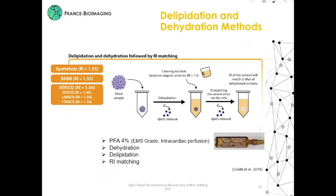The first family based on delipidation and dehydration includes different methods. The first step is to fix the sample in paraformaldehyde at 4%. It's better to perform a transcardial perfusion with first PBS buffer and after with PFA, and post-fix the organ of interest. It is very important to use image-grade PFA for the best clearing. After fixation, you have to dehydrate your sample and remove the lipids, then add the clearing solution based on organic solvent, such as BABB — a mix of benzyl alcohol and benzyl benzoate — or DBE. These solutions also play a role in lipid removal; they enter into the cells and the RI of the solvent will match that of the dehydrated protein.